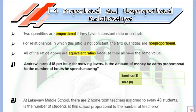From that, we can say: if the ratios are equal, then the relation is proportional. If the ratios are not equal, then it will be a non-proportional relationship.